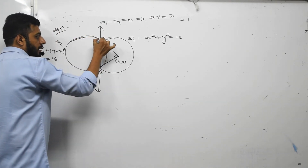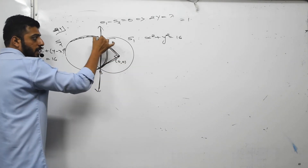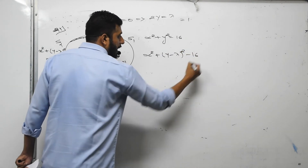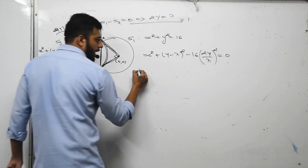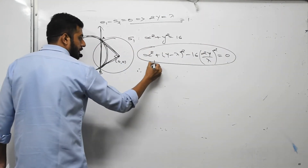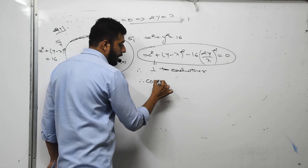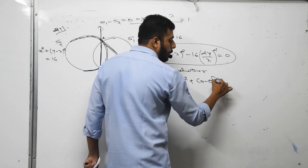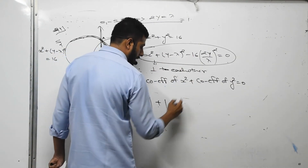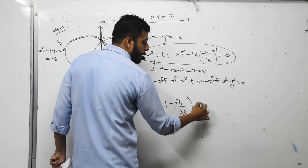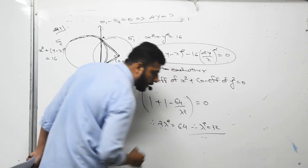Since the pair of straight lines OA and OB are perpendicular, the coefficient of x squared plus coefficient of y squared equals 0. The coefficient of x squared is 1; expanding gives the coefficient of y squared as 1 minus 64/lambda squared equals 0. Simplifying: 2 lambda squared equals 64, so lambda squared equals 32.